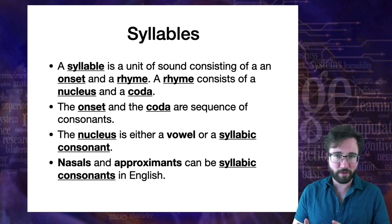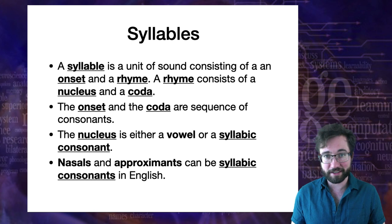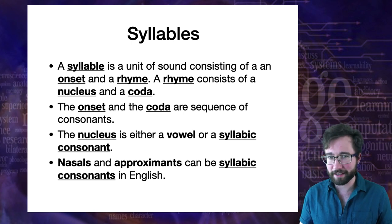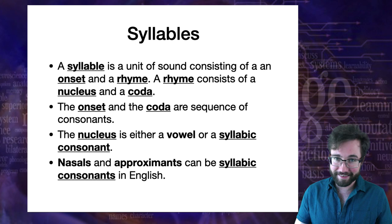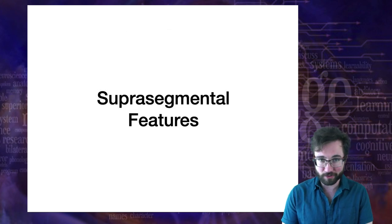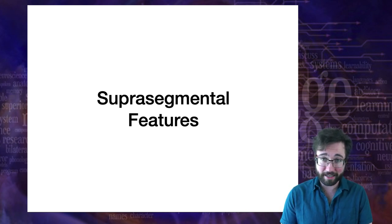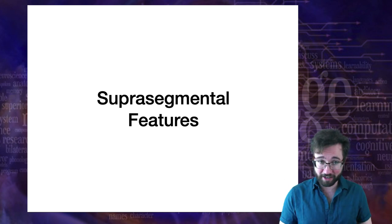Nasals and approximants can be syllabic in English. In other languages you can find cases where fricatives and stops serve as syllabic consonants, but that's pretty rare and doesn't happen in English. To review: a syllable has an onset and a rhyme; the rhyme has a nucleus and a coda; onset and coda are consonant sequences; the nucleus is either a vowel or a syllabic consonant marked with a line under the symbol.